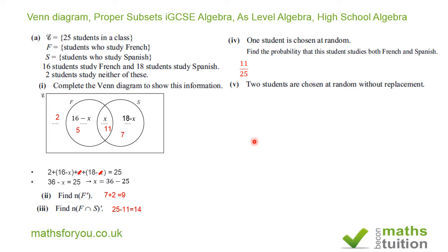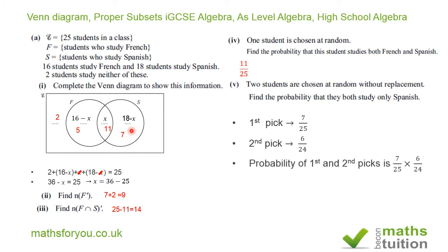And for part 5, two students are chosen at random without replacement. We want to find the probability that they both study only Spanish. So, we're in this region here. Now, our first pick will be 7 over 25. Now, having picked the first student, we now have only 6 who studied just Spanish and only 24 students left in the class. So, for the second pick probability to be 6 over 24. For the first and second pick, it will be 7 over 25 times 6 over 24. And the answer should be 42 over 600. And if you cancel that, you get 7 over 100. It doesn't matter if you leave your answer as 42 over 600. That is acceptable.